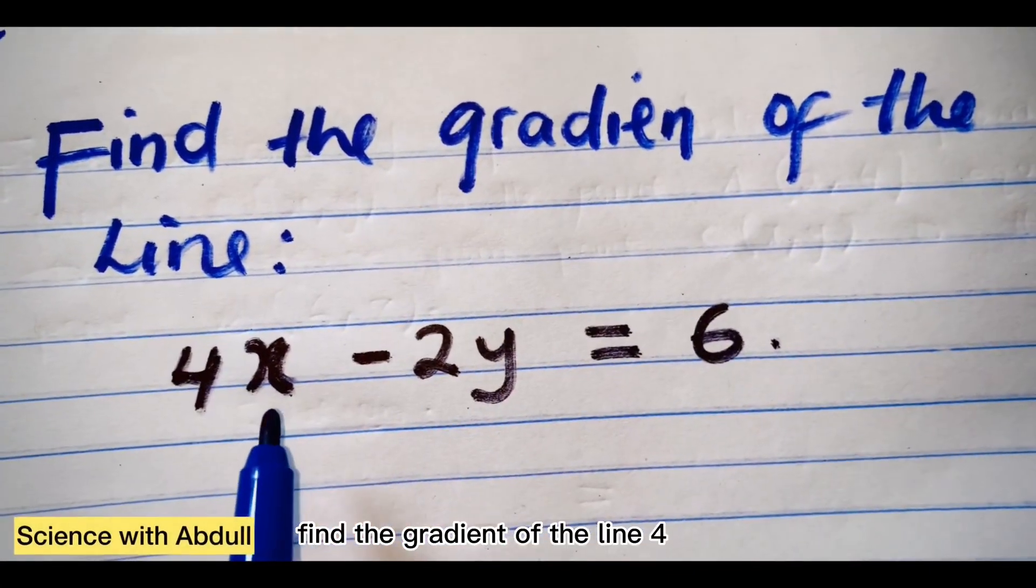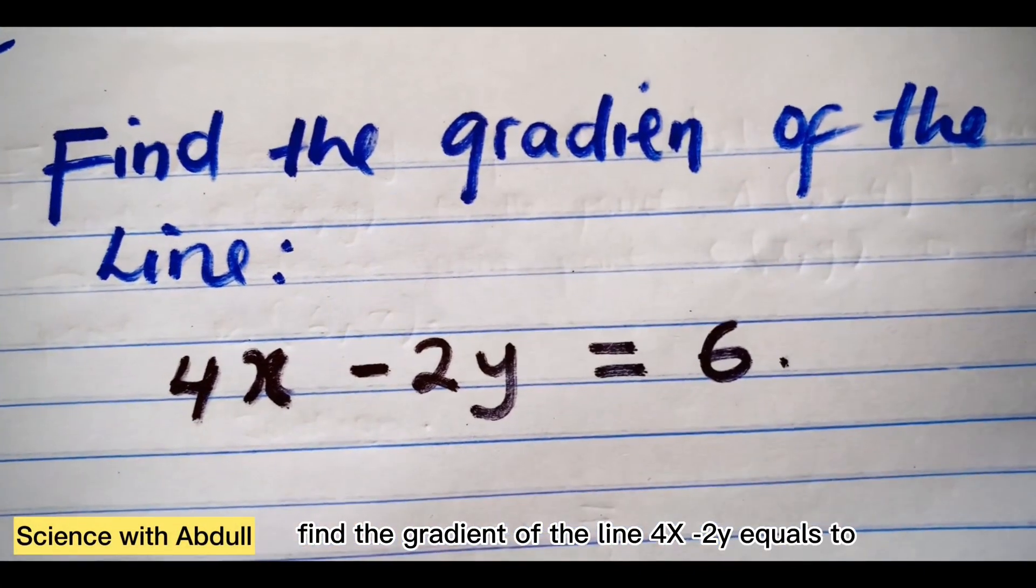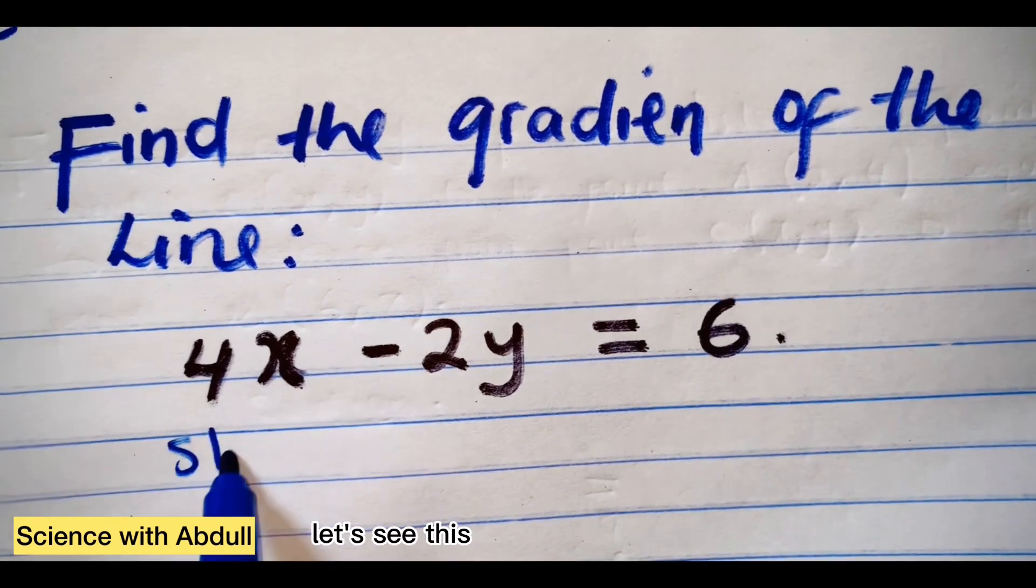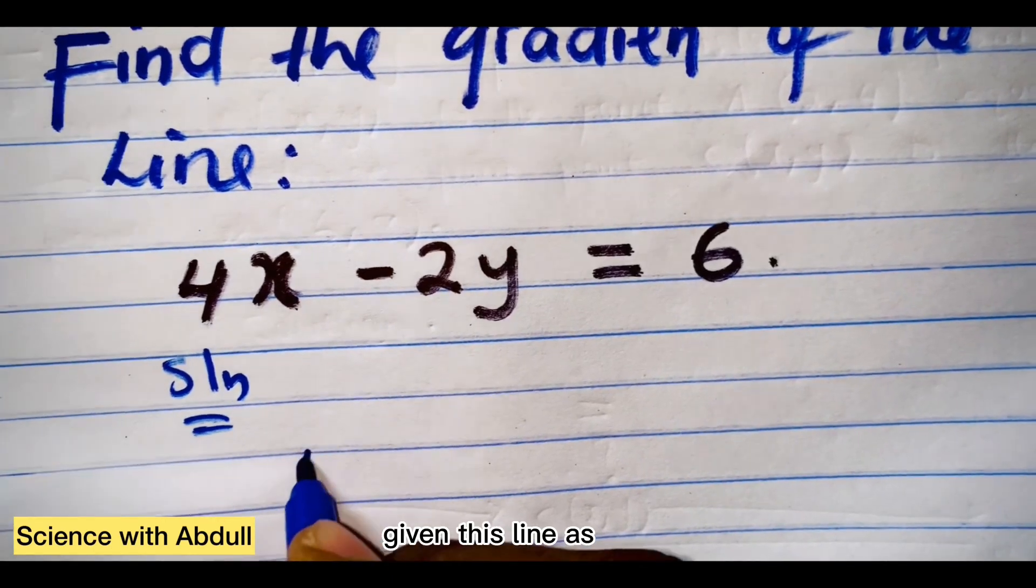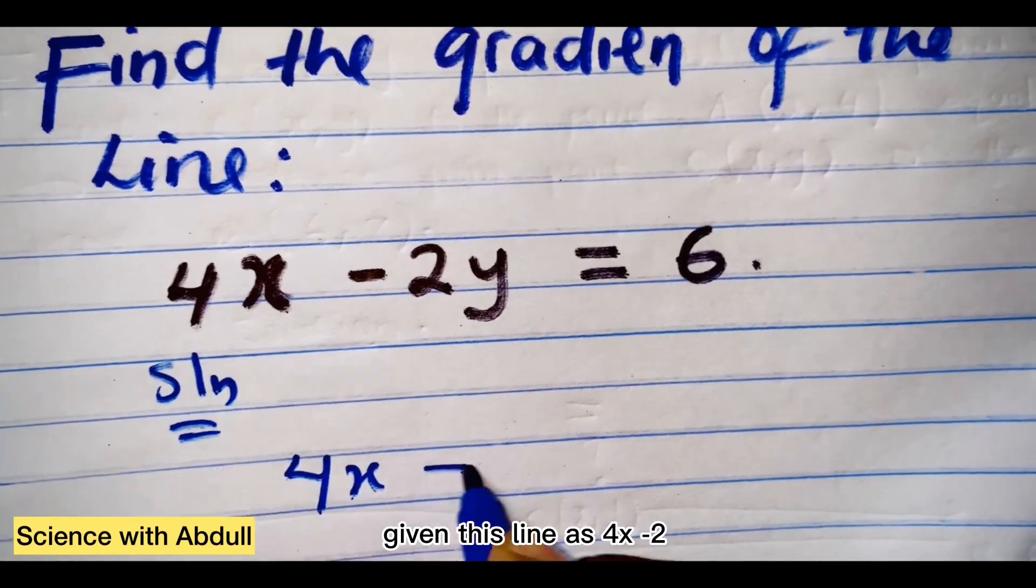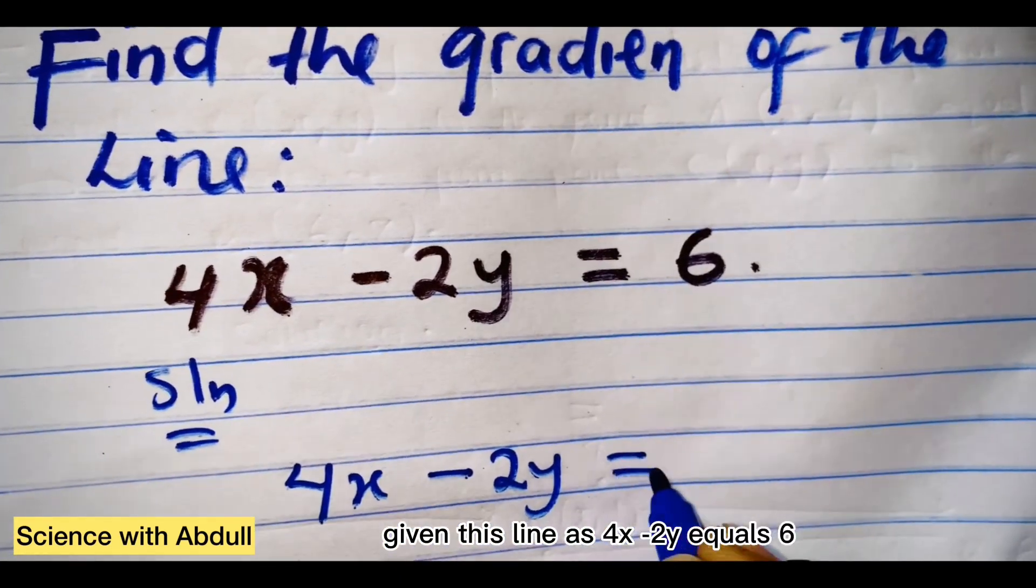Find the gradient of the line 4x minus 2y equals to 6. Let's see this simple and interesting solution. Given this line as 4x minus 2y equals to 6.